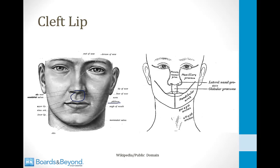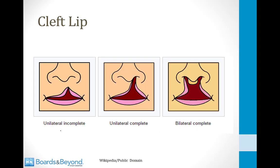The maxillary processes develop laterally and grow inward, and they fuse with those nasal prominences. So if they don't fuse normally, that can also lead to a cleft lip. There are many forms of a cleft lip — it can be unilateral and incomplete, or unilateral and complete, or it can even be bilateral and complete.